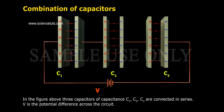In the figure above, three capacitors of capacitance C1, C2, C3 are connected in series. V is the potential difference across the circuit.